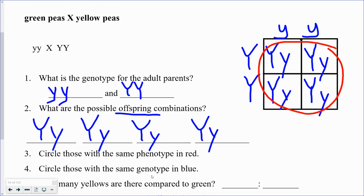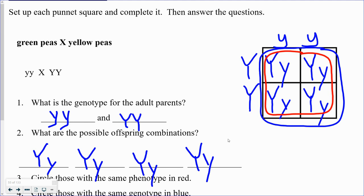Remember, genotype is the actual combination of alleles — that's where we get homozygous dominant, heterozygous, and homozygous recessive. This combination here is one dominant and one recessive. Do you remember what that's called? That's called heterozygous. Each of the other combinations is also heterozygous. So in this particular cross, they all happen to have the same genotype as well.